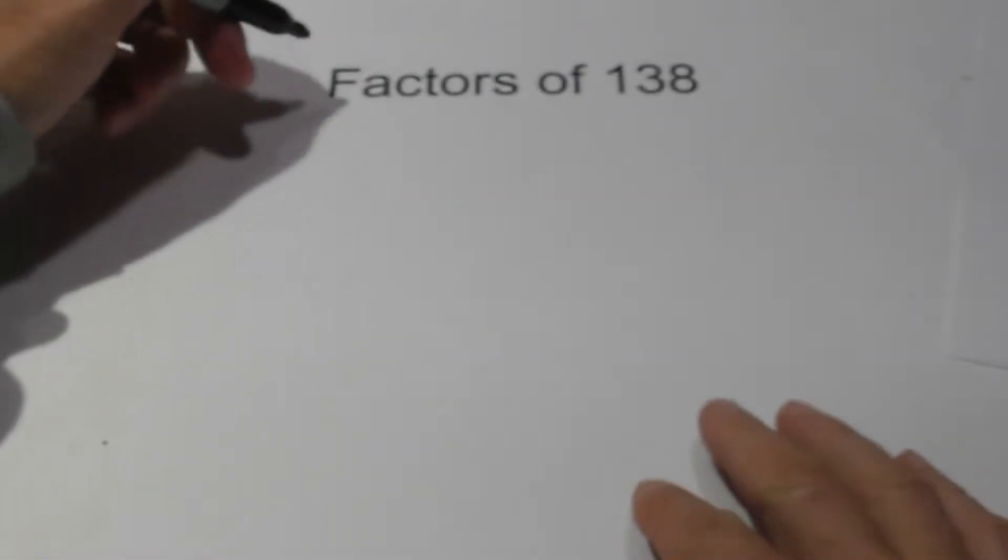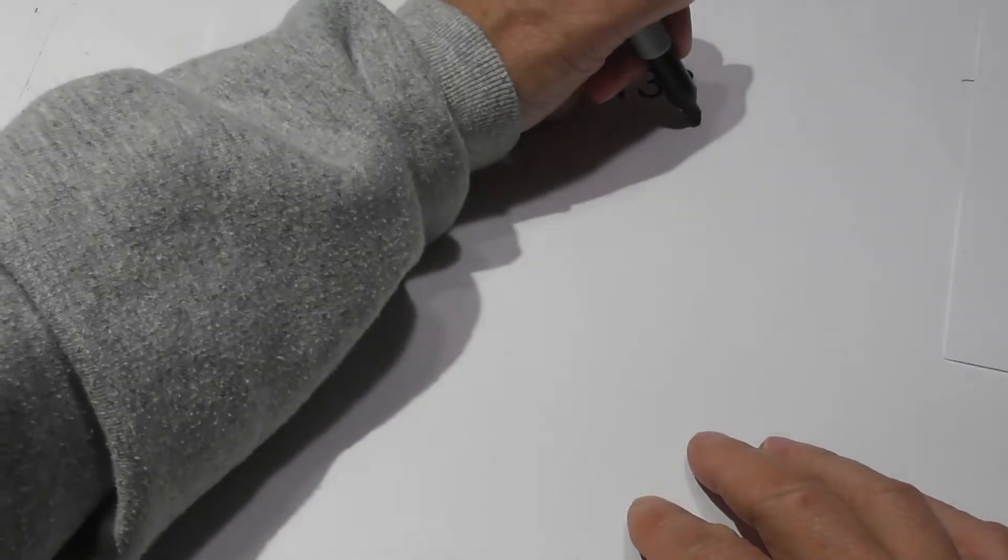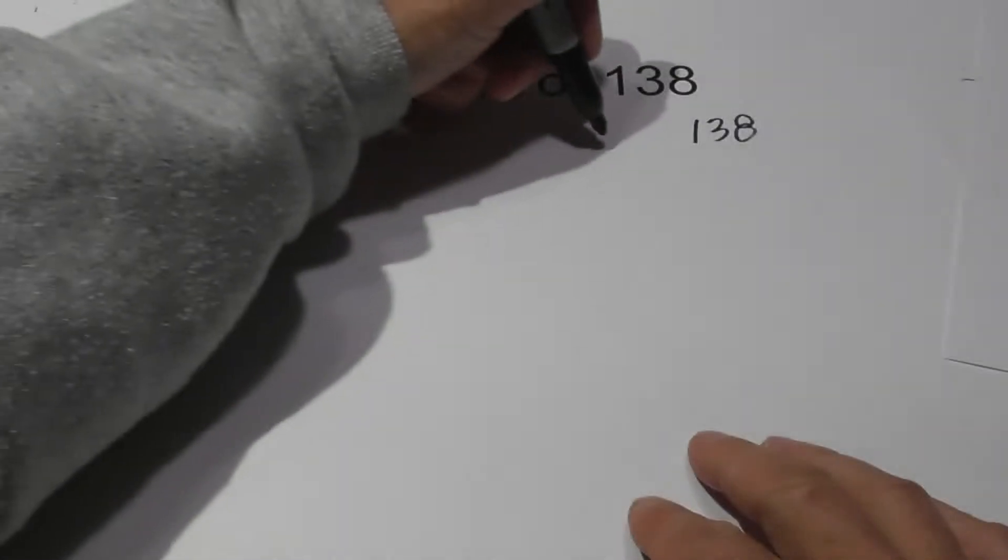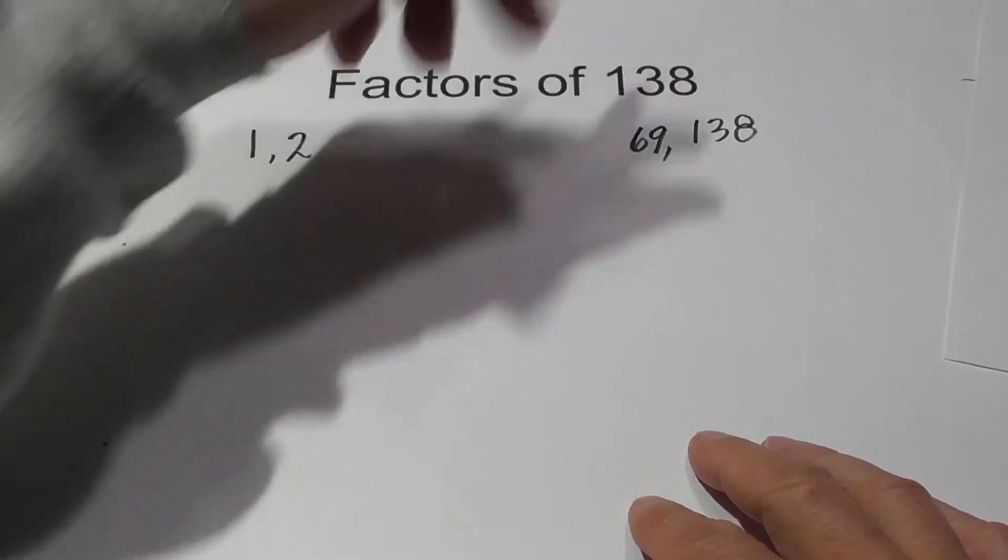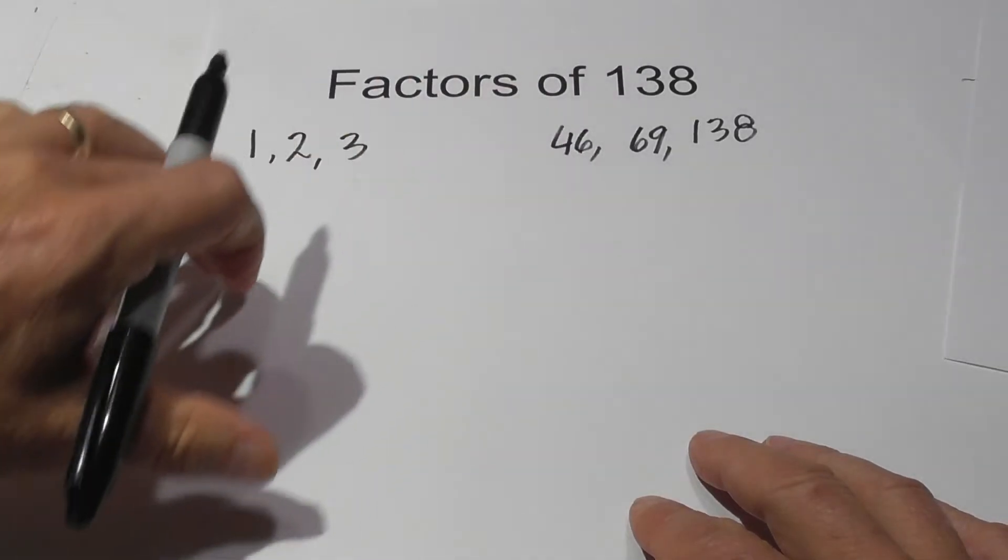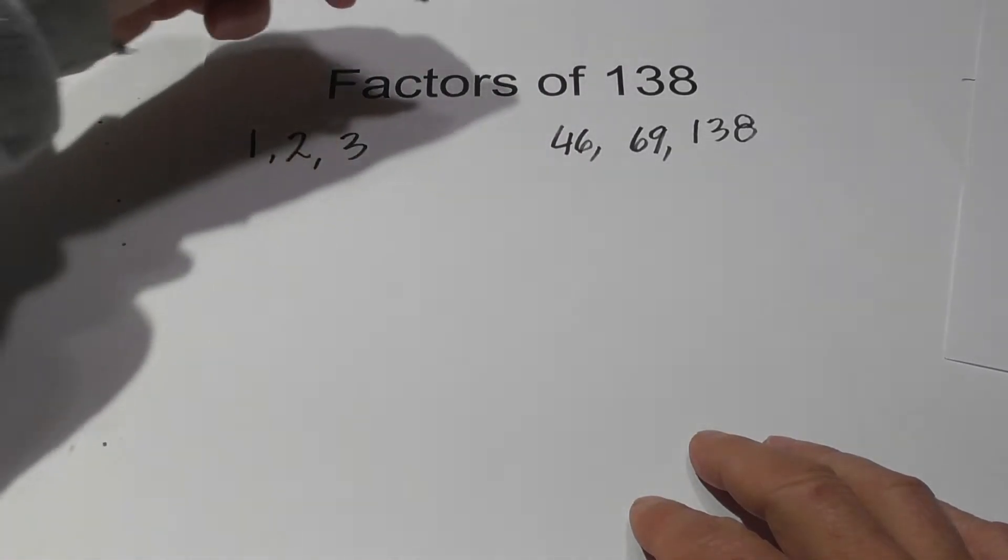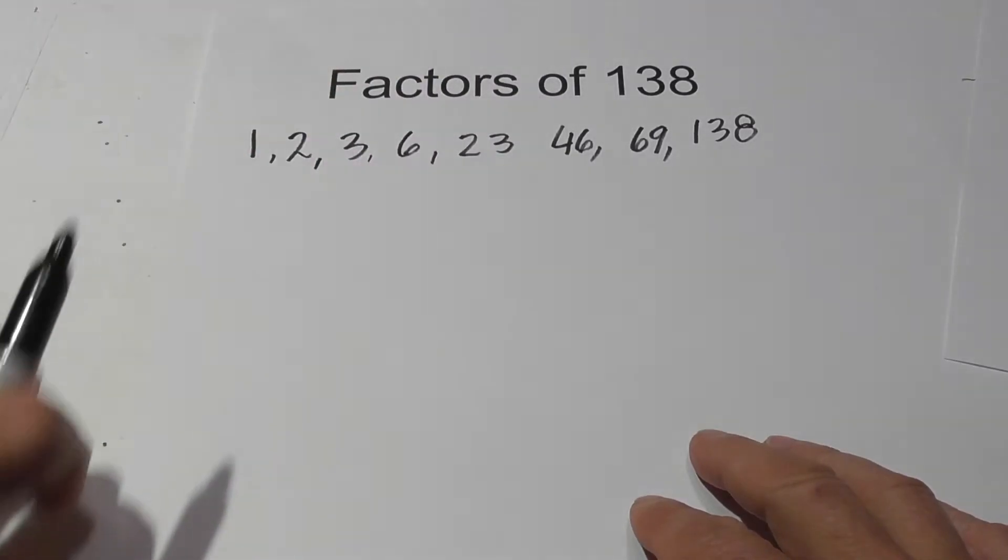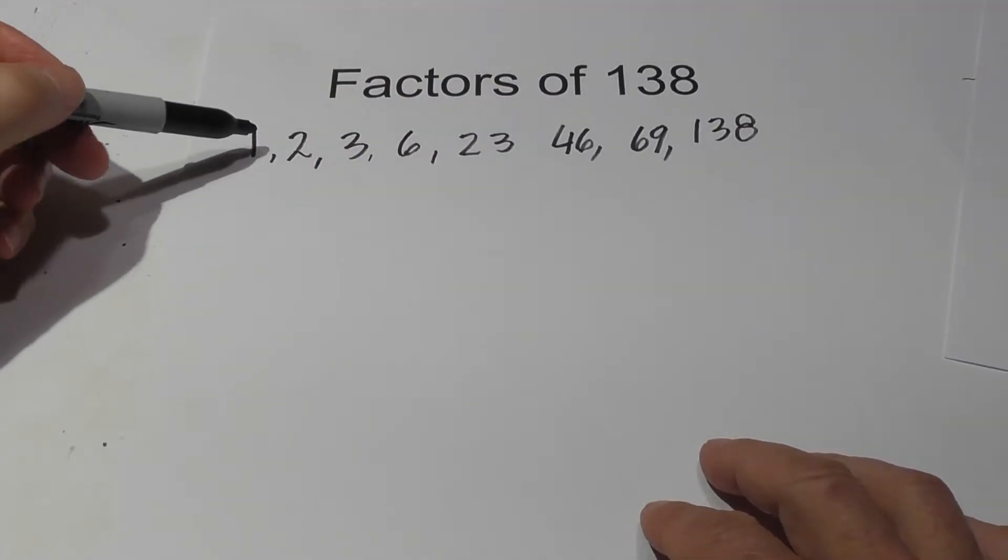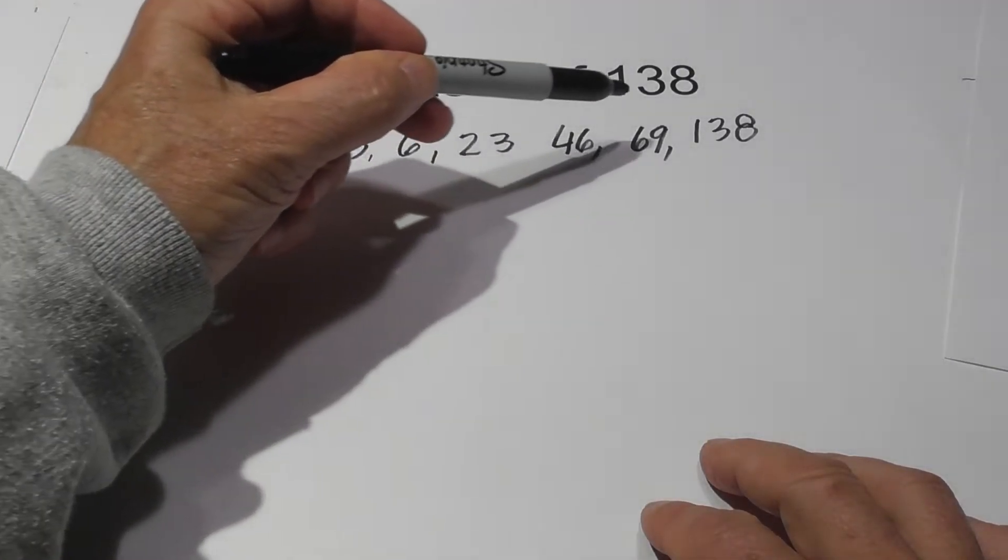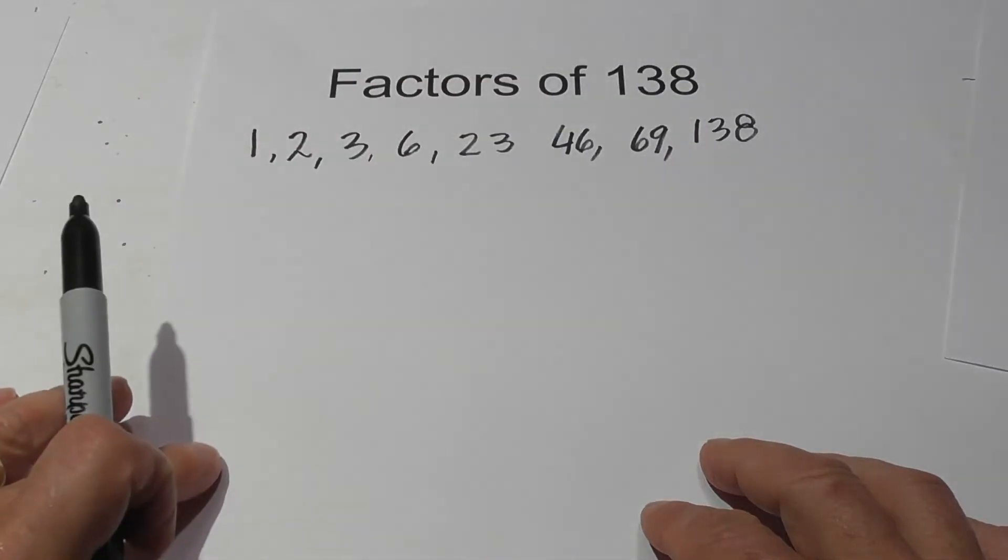They are 1 times 138, 2 and 69, 3 and 46, then we have 6 and 23. So they are factors of 138: 1, 2, 3, 6, 23, 46, 69, 138.